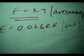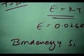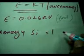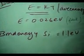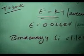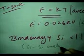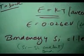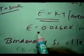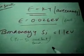You also know what the bond energy of silicon is. Here, the silicon-silicon covalent bond strength is 1.1 electron volts. This energy is for a silicon bond, while the 0.026 eV energy is for all particles.